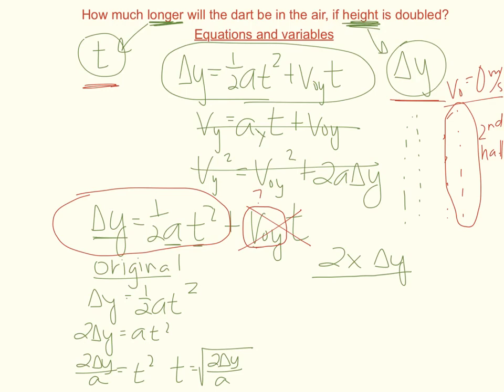So now let's try it for the two times the height. So now what you need to do is put that two times in the equation. So instead of delta y on the left I have two delta y. Set that equal to one half acceleration times time squared. Again we're looking for how does time change.